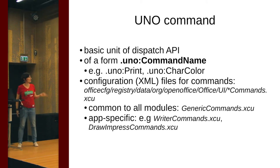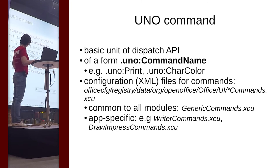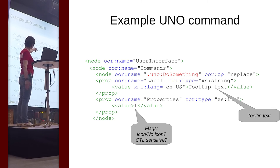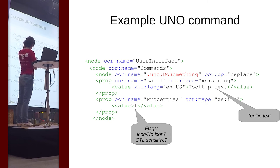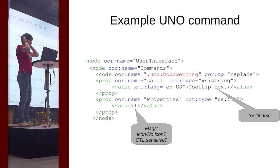Configuration files for UNO commands live in the office config registry directory. There are global commands that are universal for all applications, and there are also commands local to a particular application like Writer, Draw, or Impress. Here's a snippet of an XML file showing how a UNO command looks. The name is highlighted in red — correct, with the colon. Additionally, you can define a tooltip text for a command, which is useful for the sidebar and toolbar buttons. You can also define flags: a one means the command has an icon, zero means it has no icon.